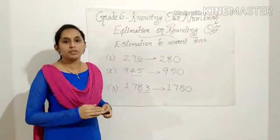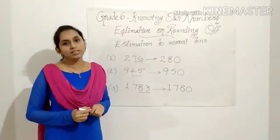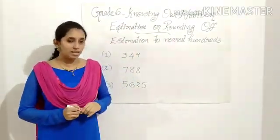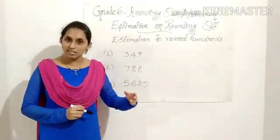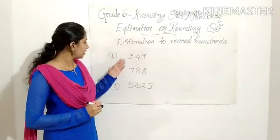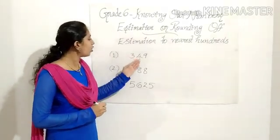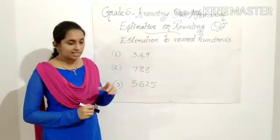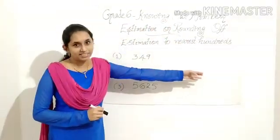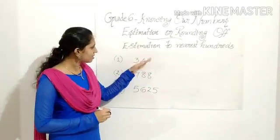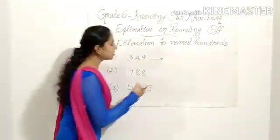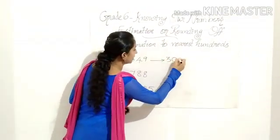Now we'll move on to the next category: estimation to nearest hundreds. In estimation to nearest hundreds, we have to see multiples of hundreds — that is 100, 200, 300, and so on; 1000, 1100, 1200, etc. The first question is 349. We have to estimate to nearest hundreds. In the nearest hundreds, you have to check the last three digits.